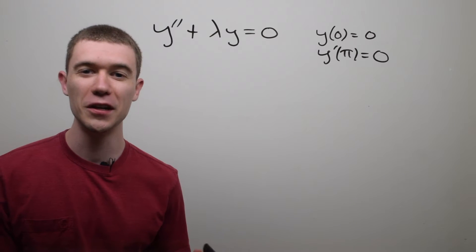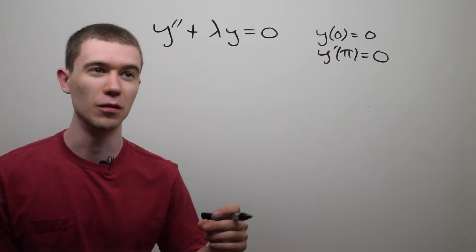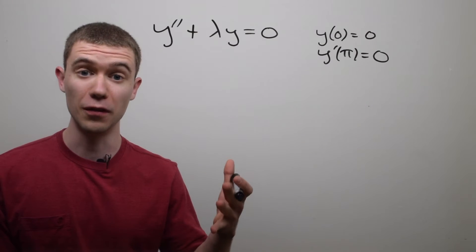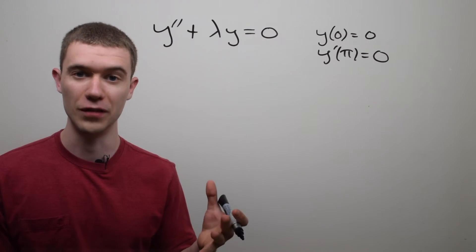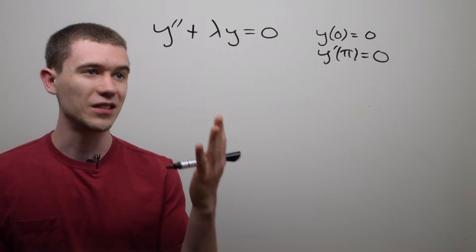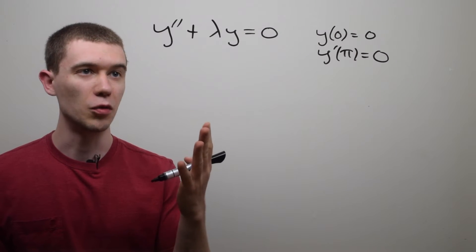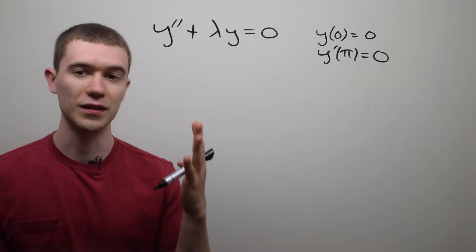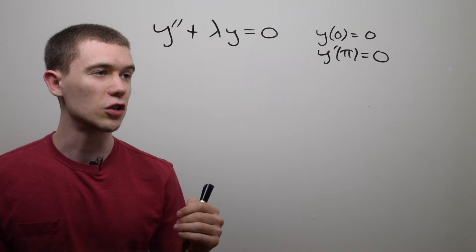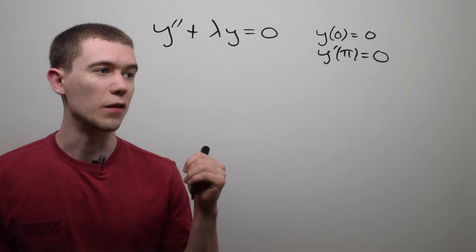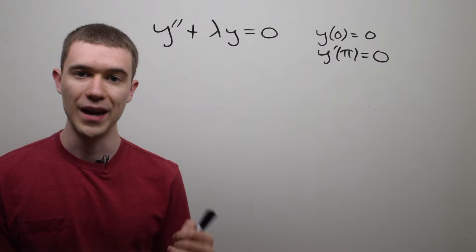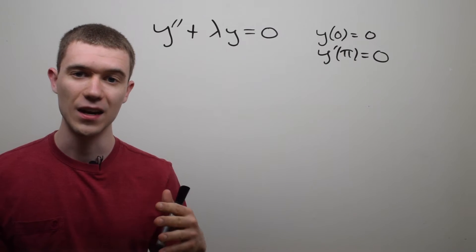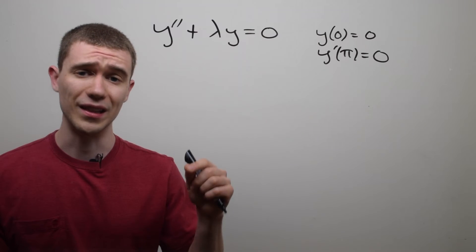Hey everyone, it's Brian. In this video I'd like to tackle this problem, which is an eigenvalue problem — or you might call it an eigenfunction problem or even a boundary value problem — and it has to do with this differential equation y'' + λy = 0, with the initial conditions that y(0) = 0 and y'(π) = 0. There are a couple different things that can happen with this depending on what λ is.